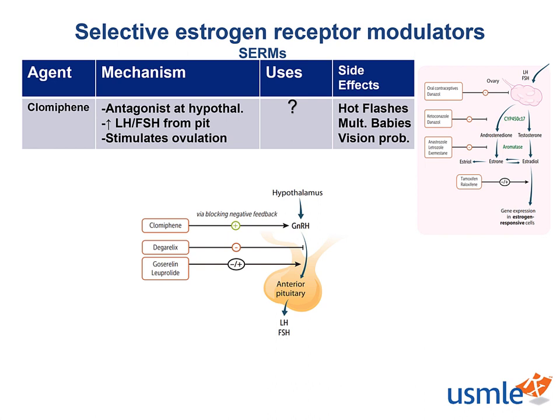Normally, estrogen binds with the estrogen receptors on the hypothalamus and negatively inhibits GnRH release, which reduces FSH and LH secretion from the anterior pituitary. Clomiphene works by inhibiting these estrogen receptors and prevents this negative feedback, thereby increasing LH and FSH.